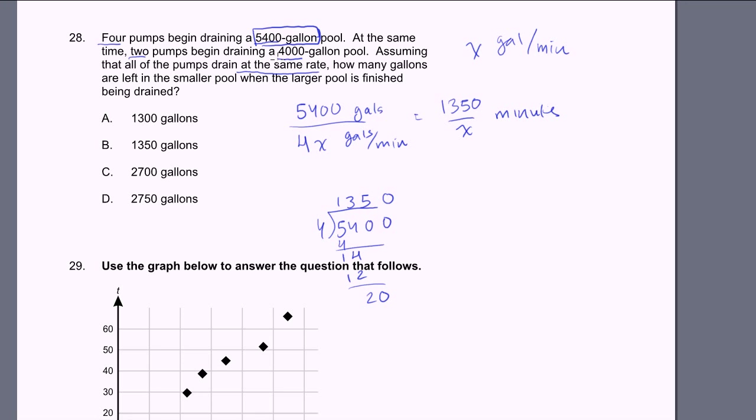Now, how much has drained out of the 4,000 gallon pool at that point? Well, we're going to be draining 2x gallons per minute. And how long are we going to be doing that for? We're going to do it until this pool is completely drained. And we figured out this is how long it takes to drain it: 1,350 over x minutes. So 2x gallons per minute times 1,350 over x minutes.